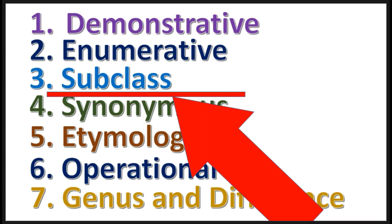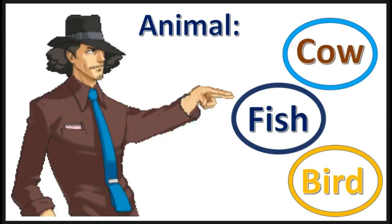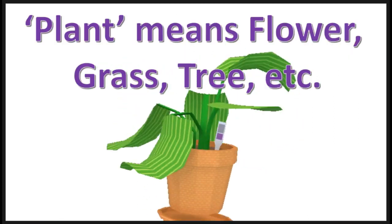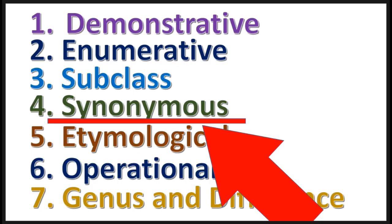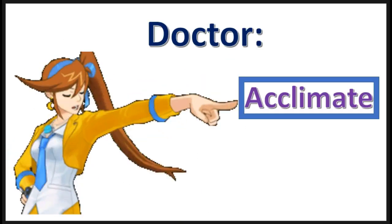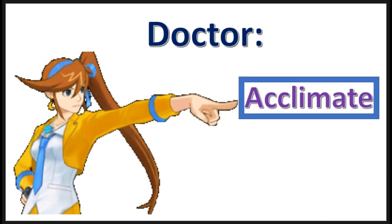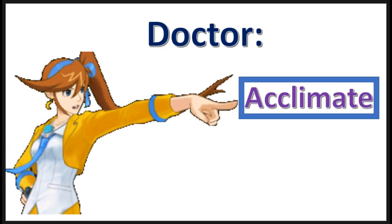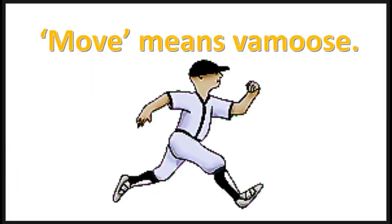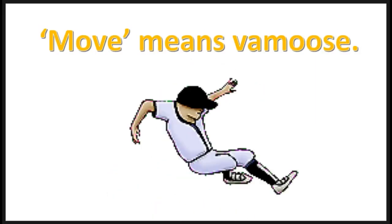The subclass definition is when you name members of the subclass of the word being defined. Here is an example. The synonymous definition is when you provide another word that has the same attributes as the word being defined. Here is an example.